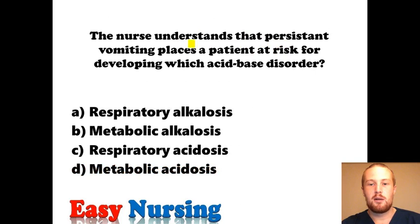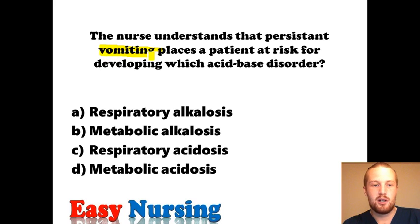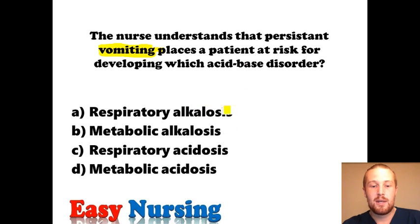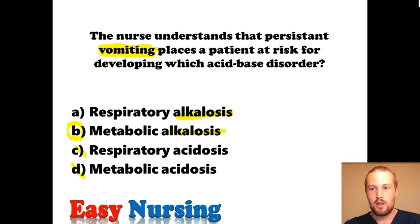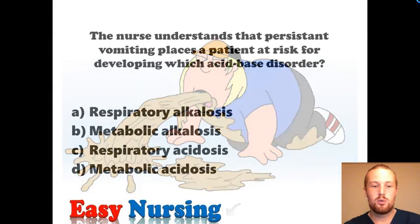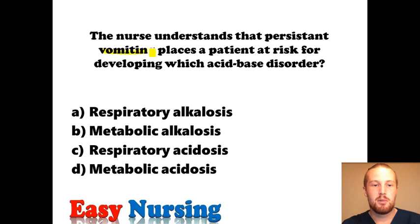The nurse understands that a patient with persistent vomiting is at risk for developing which acid-base disorder? The patient is vomiting — what's in vomit? Hydrochloric acid. So they're losing acid, which puts them at risk for being alkalotic. Vomiting doesn't involve the respiratory system, so what we'll see here is metabolic alkalosis. With a question like this, don't overthink it — of course this patient could be aspirating, but the question is just about what vomiting puts them at risk for: alkalosis, not respiratory in origin. The answer is B.